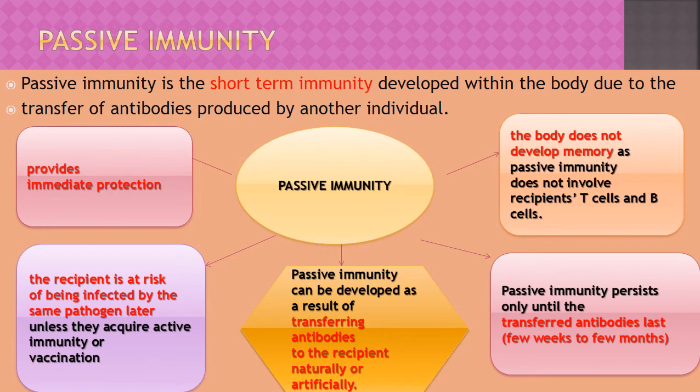Passive immunity is a short-term immunity developed in the body due to the transfer of antibodies produced by another individual. The body doesn't have to produce its own antibodies — no immune response is evoked. The antibodies are passively transferred, giving immediate protection from that particular disease. For example, if a person has developed tetanus or hepatitis A, or has been bitten by a snake or rabid dog, immediate transfer of antibodies provides immediate protection.